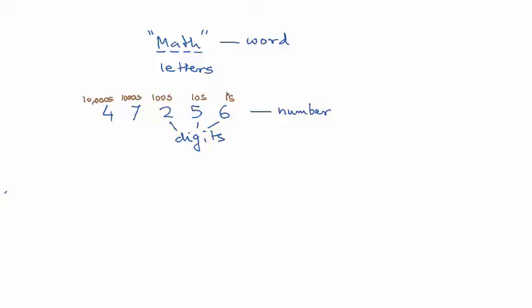Notice that the place values increase by a factor of 10 as you move from right to left. 1 times 10 is 10, 10 times 10 is 100, 100 times 10 is 1000, 1000 times 10 is 10,000 and so on. And the value of a specific digit in a number depends on its place value.